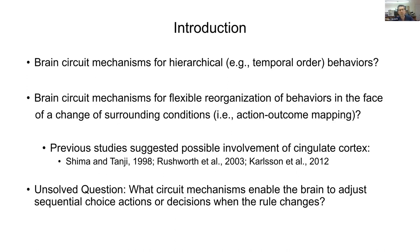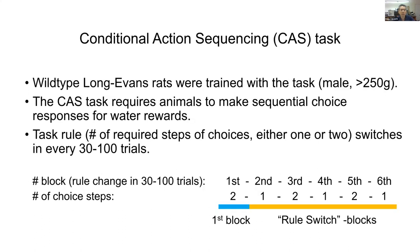To address this question, we devised a behavioral task that we call the Conditional Action Sequencing task, or CAS task. In each trial, the rat is required to make sequential choice decisions to obtain a reward. Every 30 to 100 trials there is a change of task rule, and the number of choice steps switches between the two-step and single-step conditions.